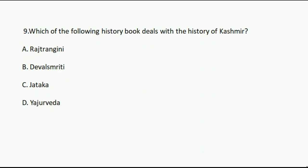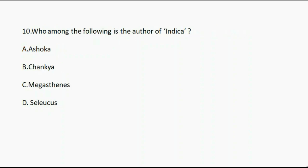Question number nine: Which of the following history books deals with the history of Kashmir? Option A: Rajatarangini. Option B: Devalsmriti. Option C: Jataka. Option D: Yajurveda. And the correct answer is option A, Rajatarangini.